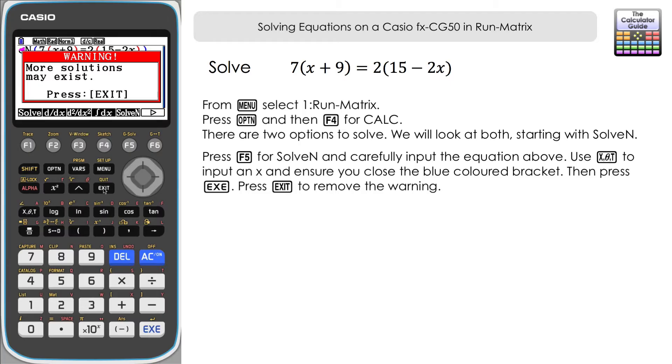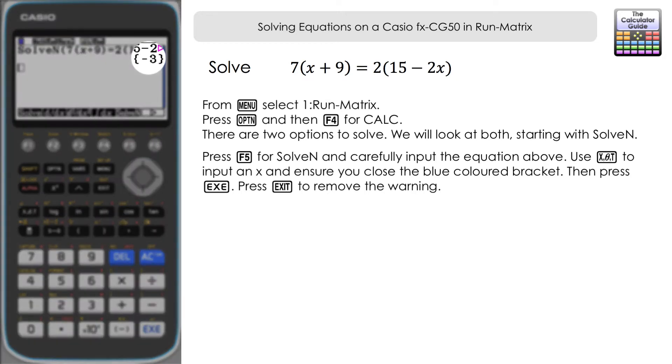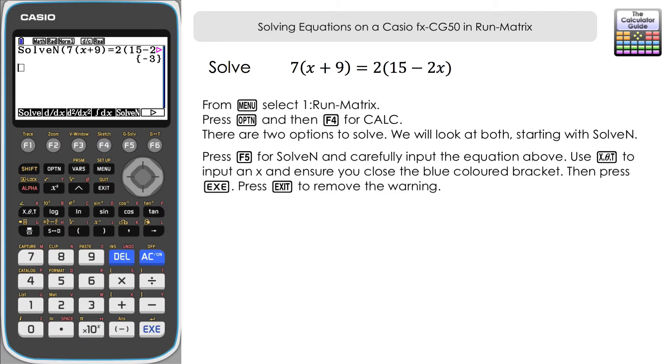Basically the calculator is just covering itself here that it's going to find the solution, I believe, closest to zero. Obviously with some functions that we try and solve, there are other solutions that might exist. In this case there isn't—there's only one solution—but the calculator is just letting us know it is just solving and finding one solution here. So let's press exit and you can see that we've got our solution here within the funny shape brackets: -3 as a result.